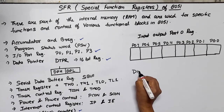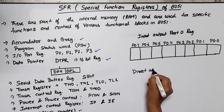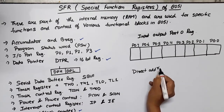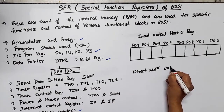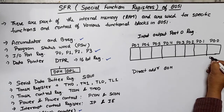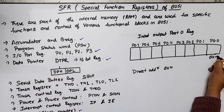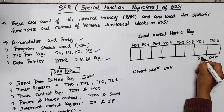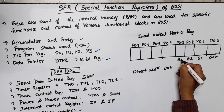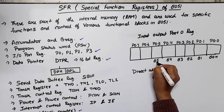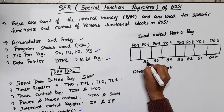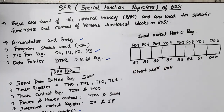The direct address of Port 0 is 80h, and bit-by-bit addresses range from 80h to 86h — that is 80, 81, 82, 83, 84, 85, 86, 87.